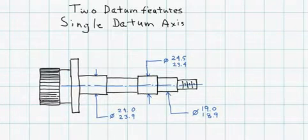We also have a secondary bearing feature size 24 to 23.9 and what we want to do is to relate another diameter at this 19 to 18.9 back to those two bearing contact features.